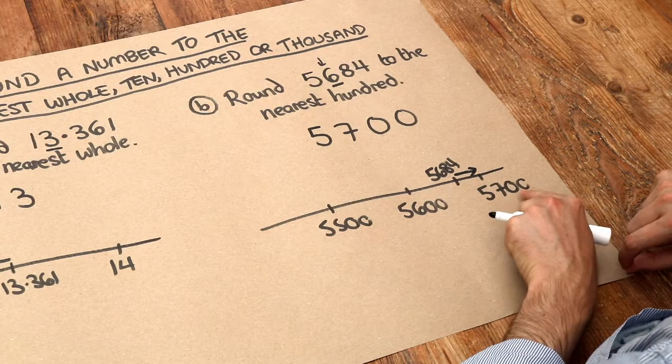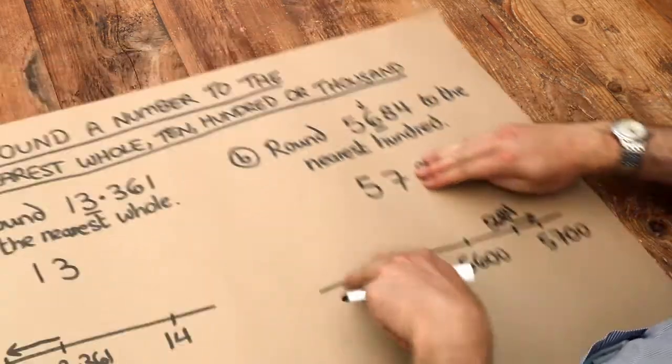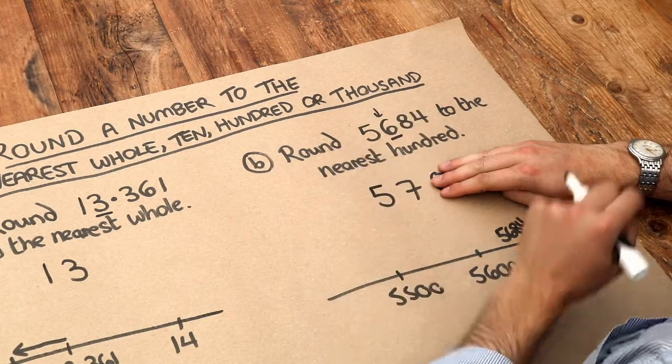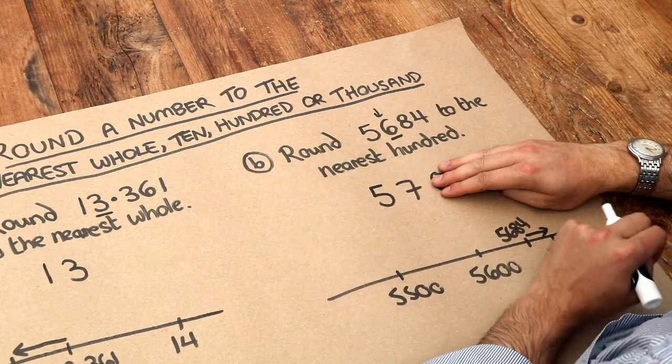And you can see that we need those zeros on the end, because otherwise 57 is a completely different number to 5,684, and we wouldn't have rounded this at all.